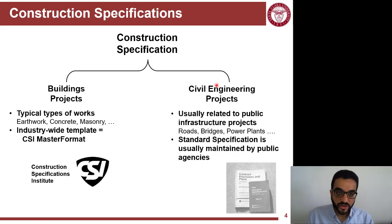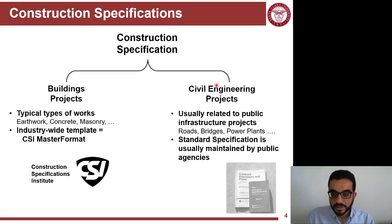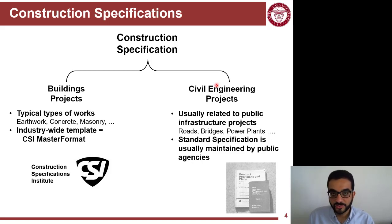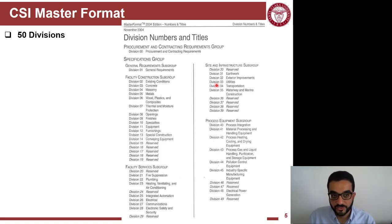Civil agencies might follow a national guideline or entity — for example, the Department of Transportation might follow the guidance of the Federal Highway Administration. So depending on the project type, buildings versus civil, you will have different representations and organization of specifications. For this course, we'll focus on the most standard one: building projects following the CSI Master Format.